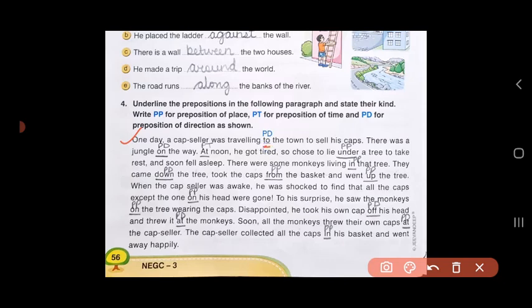'Under' is telling you the place where he was lying, so under will be PP, preposition of place. Next sentence. There were some monkeys living in that tree. In that tree is the place, so PP preposition of place for 'in'. Next. They came down the tree. 'Down' is preposition of direction. Took the caps from the basket. 'From' is preposition of place. And went up the tree. 'Up' again is preposition of direction, so PD.